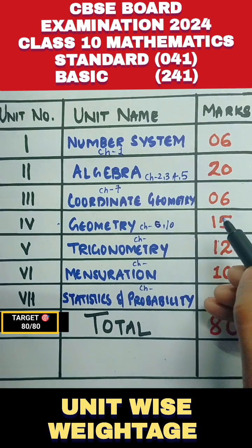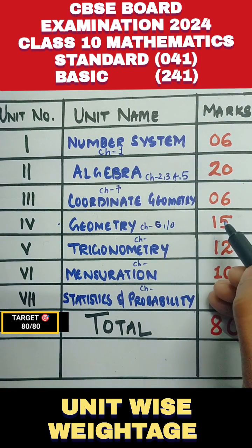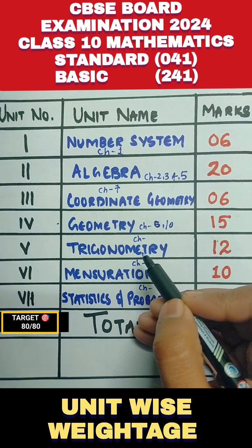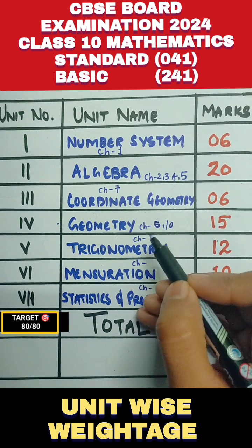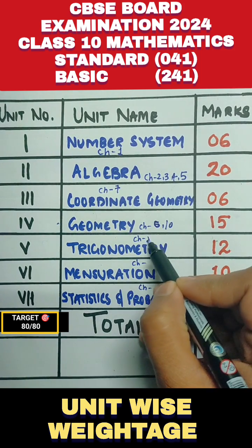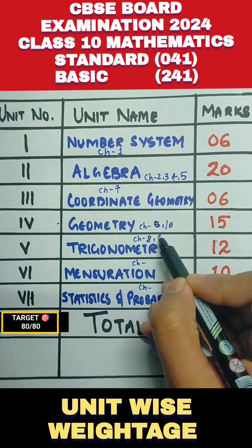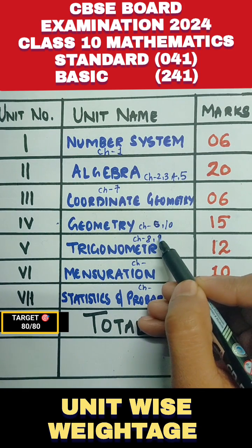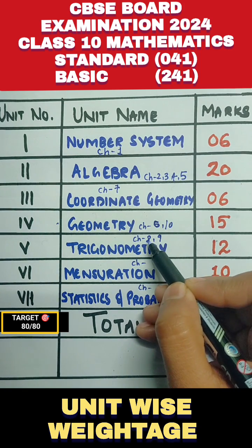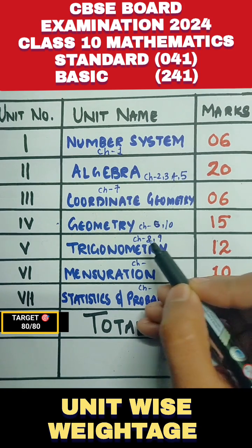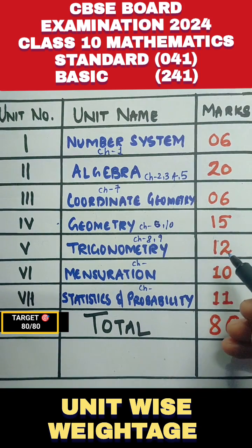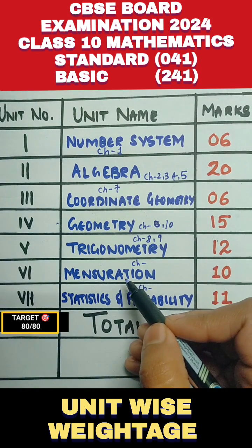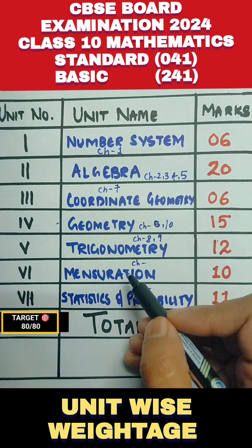After that we have Trigonometry, which contains two chapters: Chapter 8 — Introduction to Trigonometry — and Chapter 9 — Applications of Trigonometry. It carries 12 marks. Then we have Mensuration.